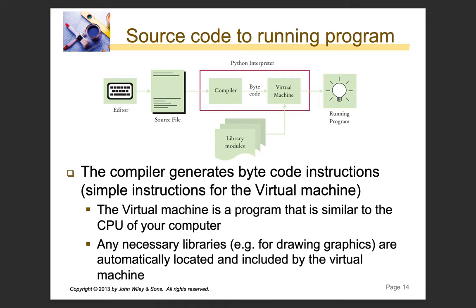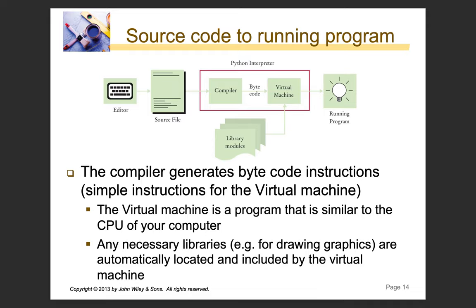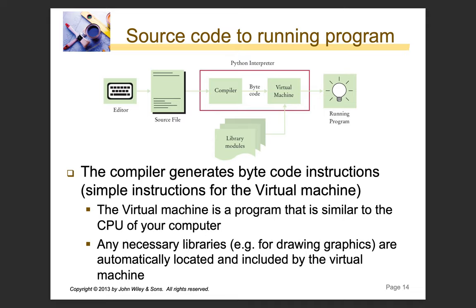So what have we just done? We've written a program in our editor, which is converted into a source file. The source file is then compiled into something called bytecode, which is run on a virtual machine, and that runs our program. The compiler generates bytecode instructions — simpler instructions for the virtual machine. The virtual machine is a program similar to the CPU of your computer, and any necessary libraries for things like drawing graphics are automatically located and included by the virtual machine.